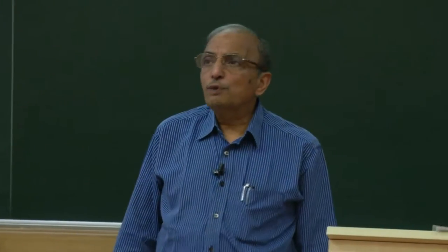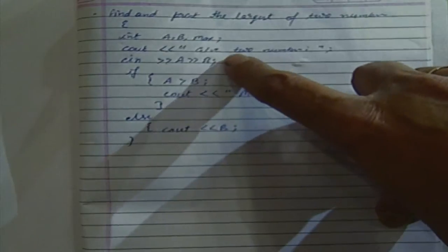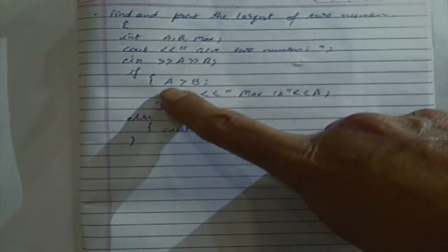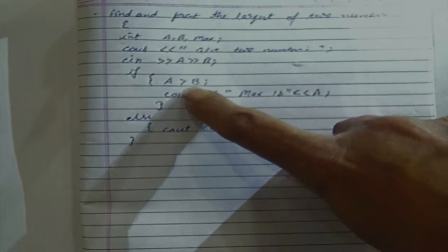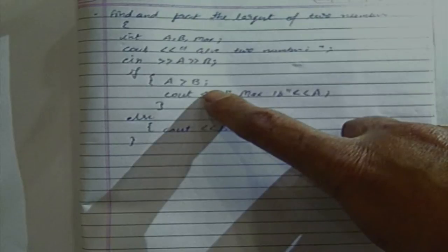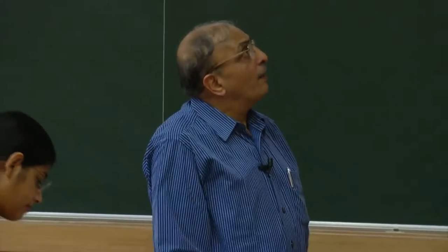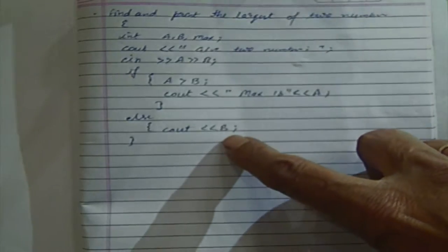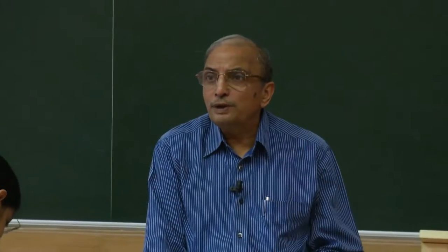Here is one program: int a, b, max — this is all given. Statements: if A greater than B written, then inside the process, semicolon. Any problem with this statement? Yes — this statement doesn't make sense. It is not an assignment statement, it is actually a condition. A condition is never written like this. Next it says output max is A, else cout B. The problem is the intent is very clear — the person has understood what is to be done — but it is not done properly.